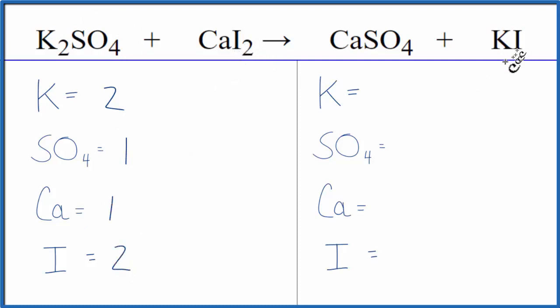On the product side, we have one potassium and again, we have one sulfate here. So we're just going to write one, one calcium and one iodine atom. And because we did that, it's a lot clearer what we need to do to balance this equation. We can see we have two potassiums on the reactant side, one on the product.